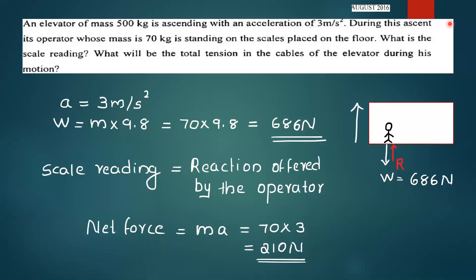An elevator of mass 500 kg is ascending with an acceleration of 3 m per second squared. During this ascent, its operator whose mass is 70 kg is standing on the scales placed on the floor. What is the scale reading?